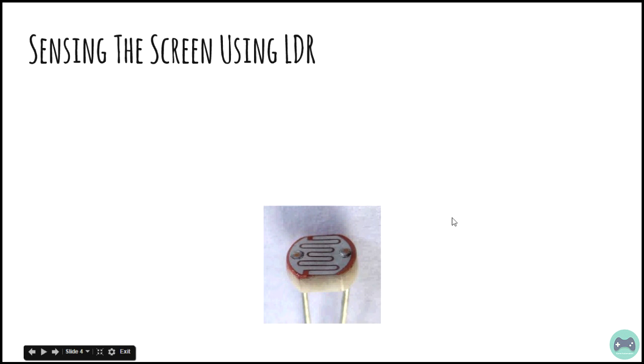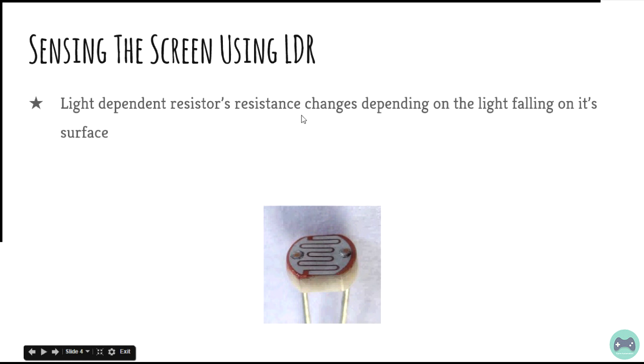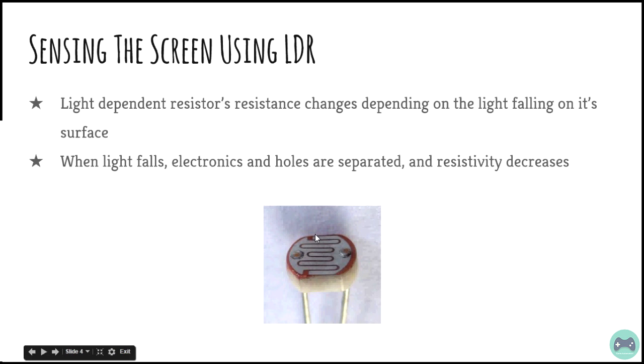We sense the screen using a light dependent resistor LDR. The LDR's resistance changes depending on the light falling on its surface. So this is the surface of the LDR and if light falls, the electrons and holes are separated and the resistivity decreases. If there is no light, they are not separated and hence the resistance will be very high.